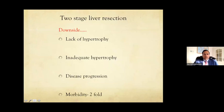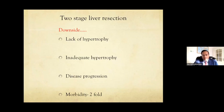The downsides of two-stage liver resection: first, the liver may not grow — one-third of patients have lack of or inadequate hypertrophy despite PVE. Second, disease progression — around 25–30% of patients develop new disease in the FLR or progression at the disease site. Essentially only one-third to 40% of patients can proceed to the second stage. Also be mindful that two big operations doubles the morbidity.